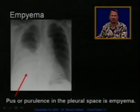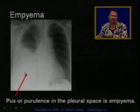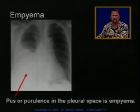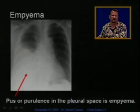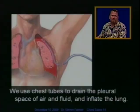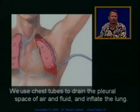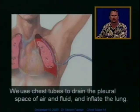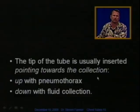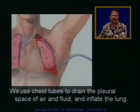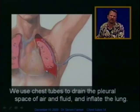We can see the ribs and the heart on X-ray. Over here is what's called an empyema — an empyema is pus or purulence in the pleural space. This is the purulent fluid collection, and this is the collapsed lung. We use a chest tube to drain the pleural space of either air or fluid, and this reinflates the lung. The tip of the tube is usually pointing towards the collection — chest tubes point up for pneumothorax and down for fluid collections, because air goes up and fluid goes down.